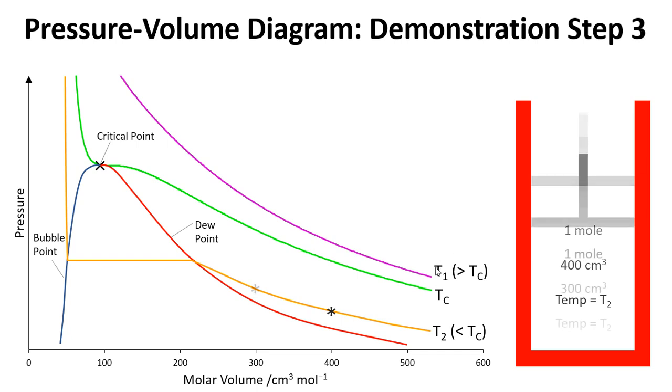And if we compress this further, again keeping this isothermal by removing any excess heat, we start to move along the isotherm even further so the pressure's going up. Once we get to the dew point here at 218 centimetres cubed we get the first drop of liquid forming. If we reduce the volume even further then we start to generate more liquid and this is now coexisting with vapour. And then if we get down to 51.5 centimetres cubed we're now at the bubble point so we have the last bubble of vapour present.